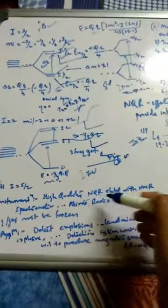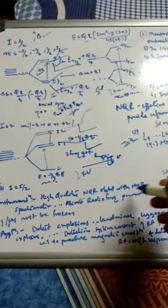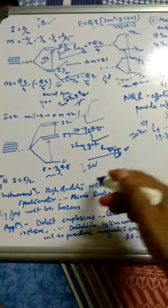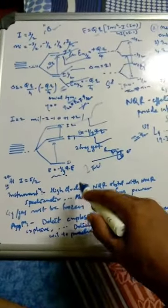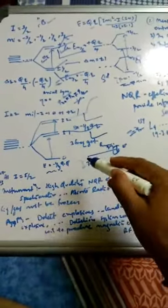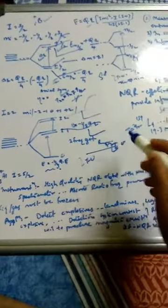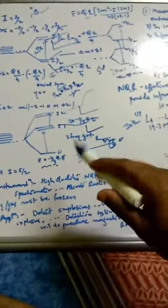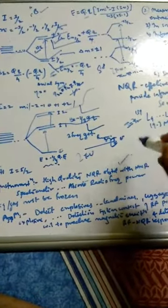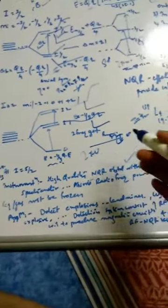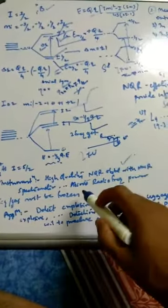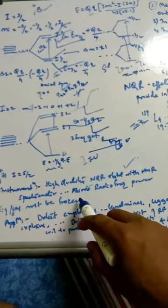For instrumentation, high-quality NQR spectra are obtained using an NMR spectrometer. The NMR spectrometer helps obtain NQR spectra by applying radiofrequency, which is absorbed at the transition frequencies and detected by a detector. Note that NMR may not be ideal for all NQR measurements.